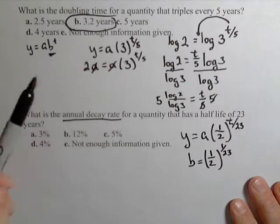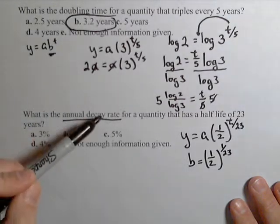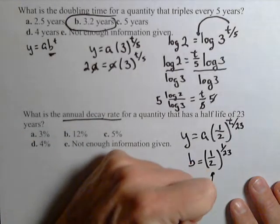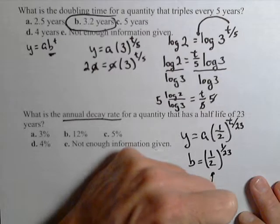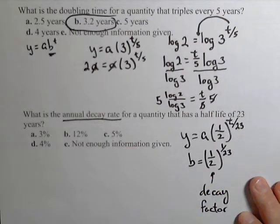Now, just like a growth rate, it's always your growth factor minus one. A decay rate is always your decay factor minus one. This is our decay factor. So we have to take this, then subtract one, and turn it into a percent.